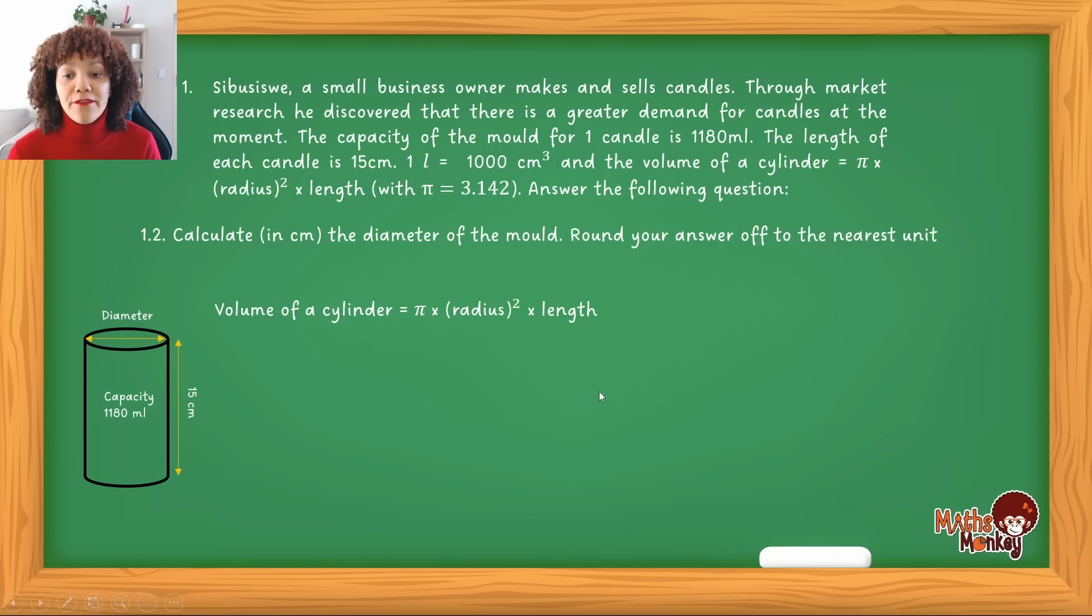So if we're going to start, now we need to actually substitute all the values that we actually know in the formula, so that we can use the formula and equation method to find the answer. So ideally the volume is equal to 3.142 times the radius, which is what you want to calculate, times 15.